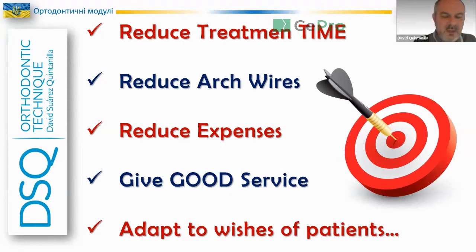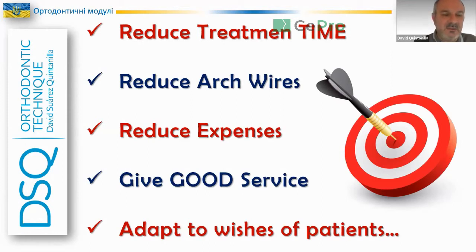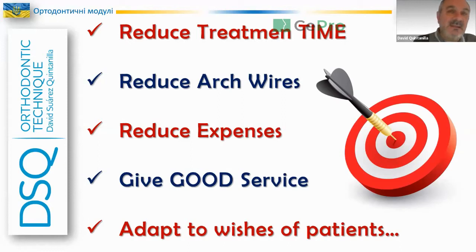In my opinion, it's very important to shorten the treatment because adult patients don't like to use brackets and wires. In my SQ technique, we combine functional aligners and brackets and wires at the same time in adults. And in kids, we combine functional appliances and fixed appliances at the same time.